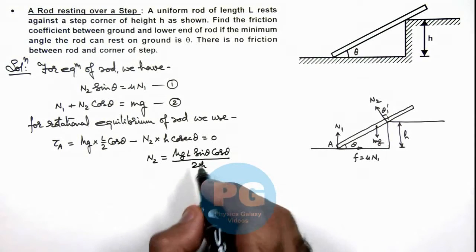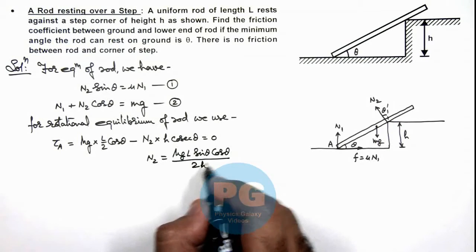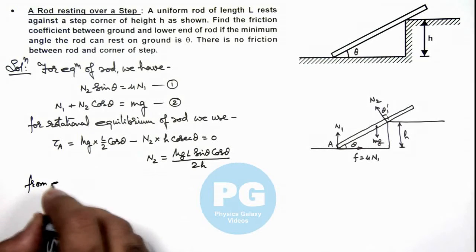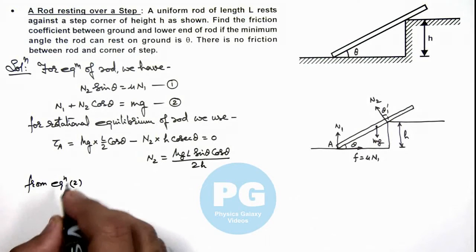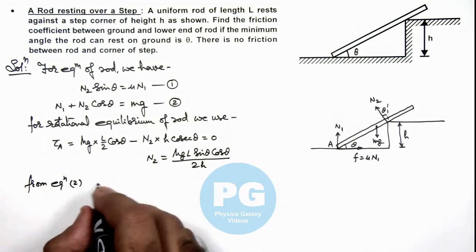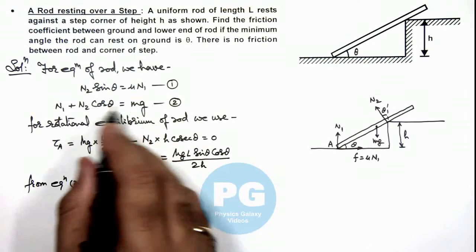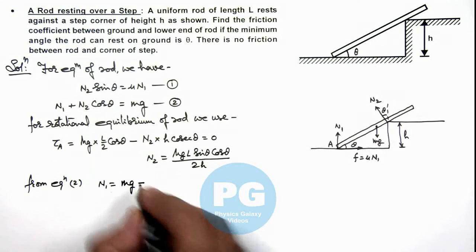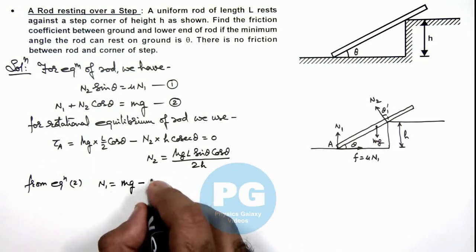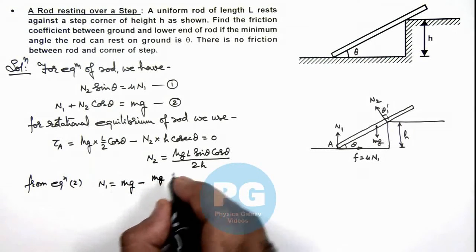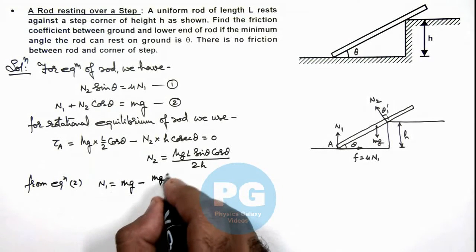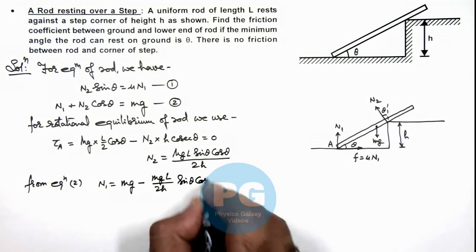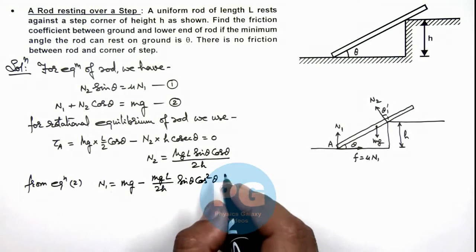Now if we substitute the value of N2 here in equation 2, then we can see from equation 2 we are having the value of N1 is equal to mg minus N2 cos theta, so this will be mg minus mg L by 2h multiplied by sine theta cos squared theta.